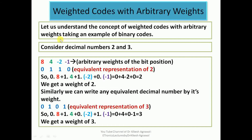Now we take another example discussing weighted codes with arbitrary weights. Consider two decimal numbers 2 and 3, using arbitrary bit position weights: 8, 4, -2, -1. To represent 2: 4 + (-2) = 2, so we write 0110 with 1s at the weight-4 and weight-(-2) positions. To represent 3: 4 + (-1) = 3, so we write 0101. This is another example of weighted codes, but with arbitrary weights assigned to each bit position.